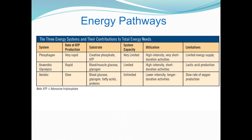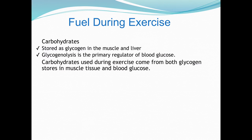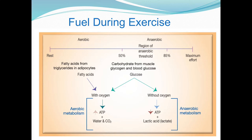That's why it's very important to understand energy pathways, because they dictate the high-intensity or intermediate-intensity work intervals we use. During exercise, carbohydrates are stored as glycogen in the muscle and liver. Glycogenolysis is the prime regulator of blood glucose, and carbohydrates come from both glycogen stores in muscle and blood glucose.